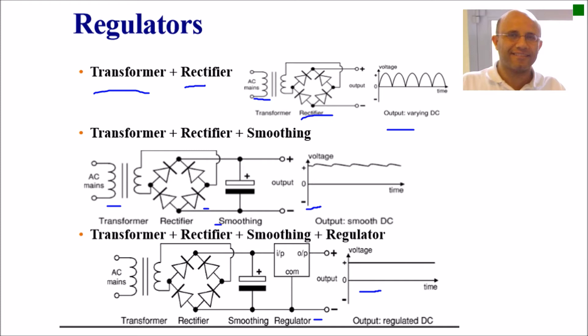After that we add a regulator. We add after transformer, rectifier, and smoothing circuit, the regulator circuit. And this is a constant voltage output which is constant, no variation in the voltage. So we ensure that the load is operating well and no damage in the electronic circuit of the load.